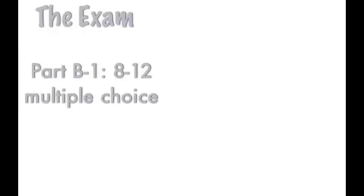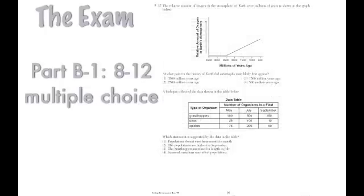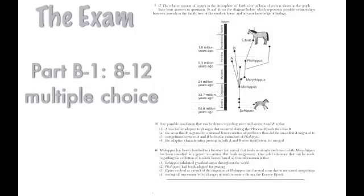Part B1, which is weird, but they call it B1, which obviously means there's a B2. B1 is also multiple-choice, but what's weird is it's not put with the first multiple-choice because these are a little bit more involved multiple-choice. There's graphs to interpret, there's data tables, there's horsies, things like that. So there are longer multiple-choice, more involved. There's about 8 to 12 of those usually.